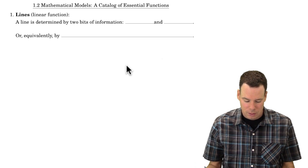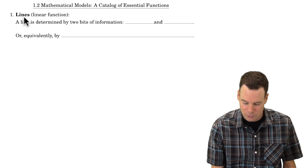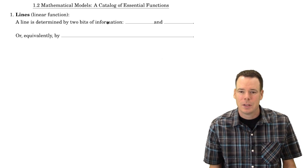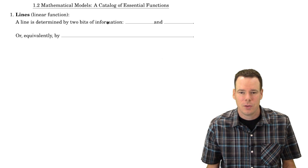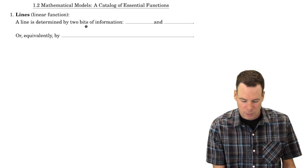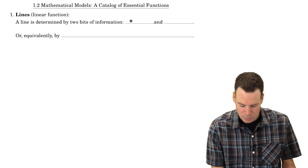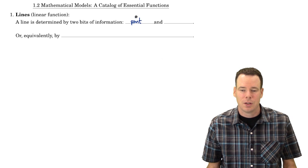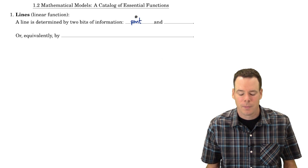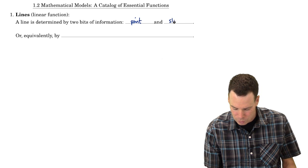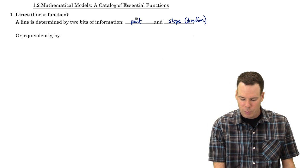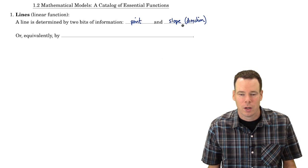First up: lines, or linear functions. A line is determined by two bits of information. We can use a point on the line — and if we know a point on the line, what else do we need? Well, slope. A slope is sufficient. In other words, we need to know what direction the line is pointing. So if we have a point and a slope, we can figure out what our line is.